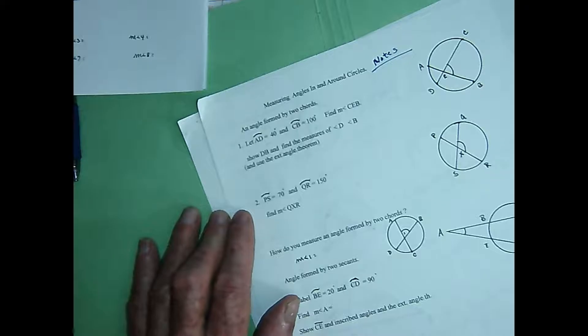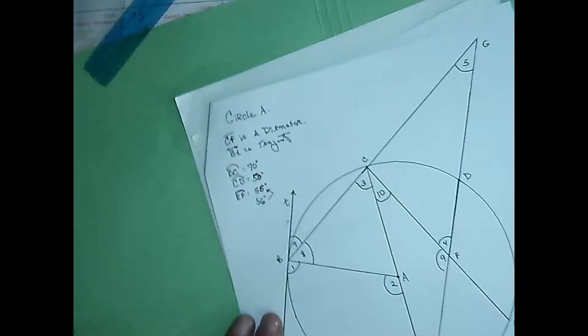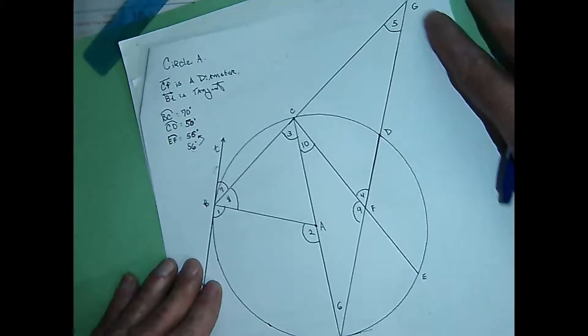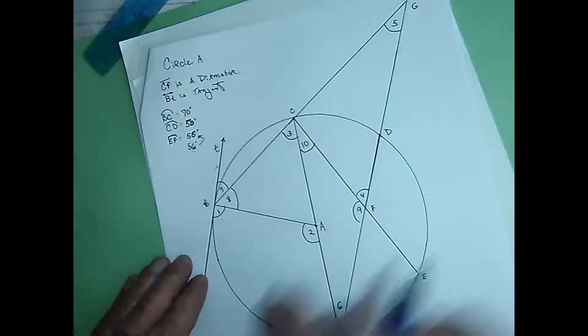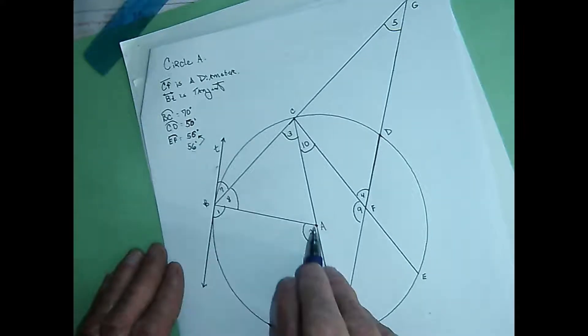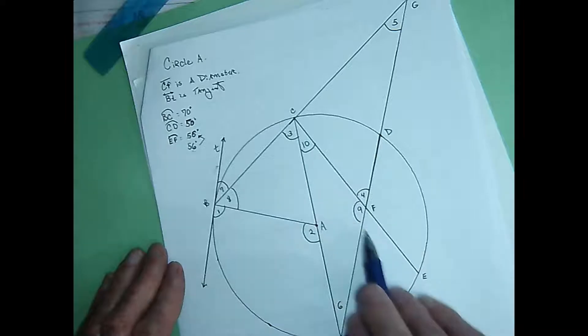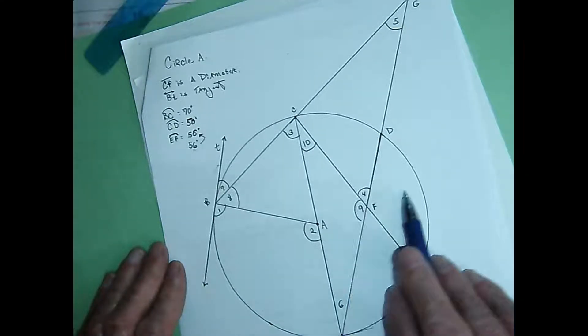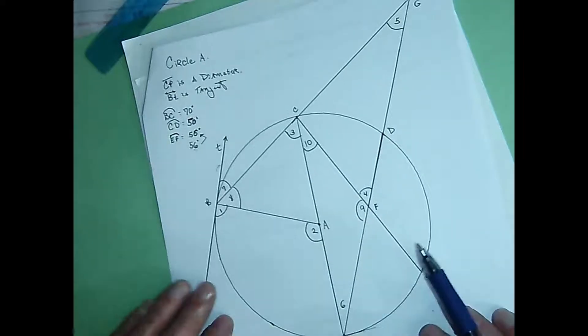There are a couple of things I want to make sure that we know ahead of time. I've made a note about those right here. You're going to find angles all over the place in circles, outside of circles, formed by secants, tangents and radii, tangents and chords — angles not at the center, some central angles, some angles that are neither central nor inscribed. Lots of angles around circles.